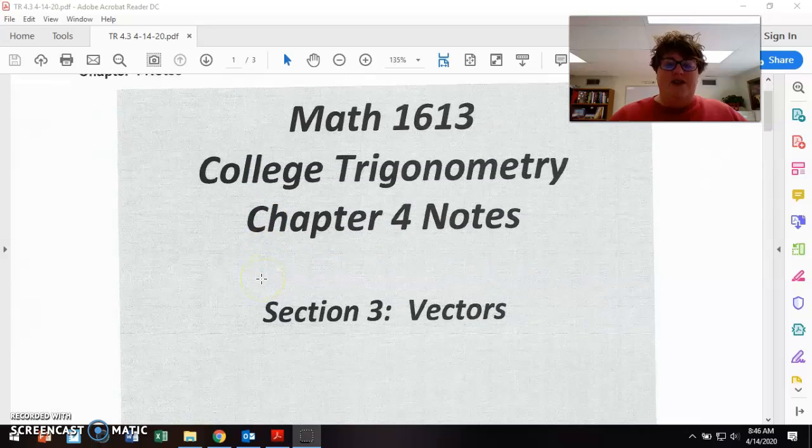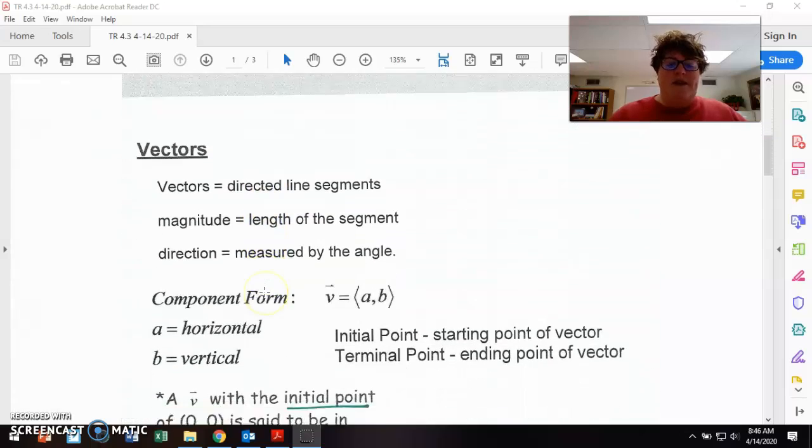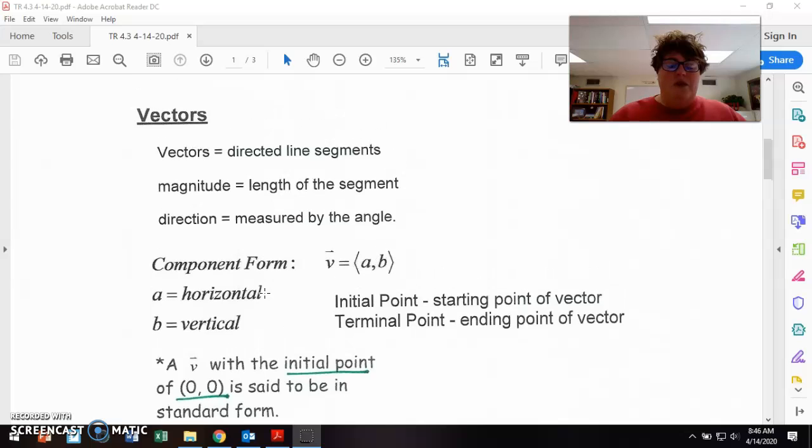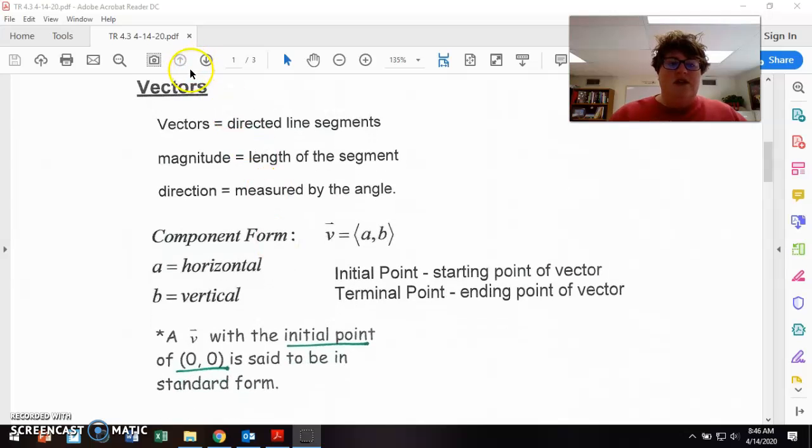Section 3, Vectors. So just a couple of things about vectors to set us up for Complex Trig Functions. What a vector is, is it's a directed line segment. When we think about that directed line segment, we have what's called the magnitude and the magnitude is the length of that segment. So from its starting point to its ending point, what is the length there? We can also find the direction measured by the angle.